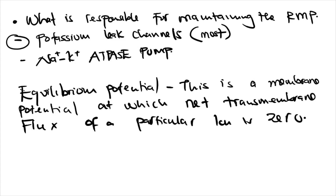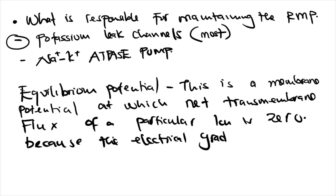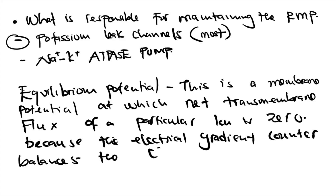Each ion that crosses the cell membrane has its own equilibrium potential. At this potential there is no net movement of that ion across the membrane. Let's look at the equilibrium potentials for the common ions.